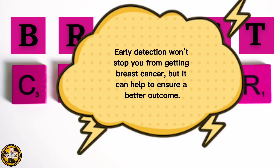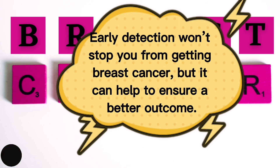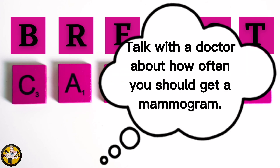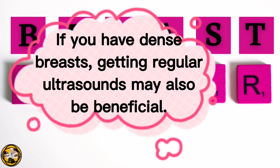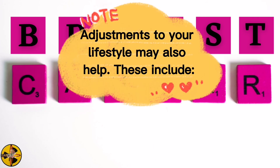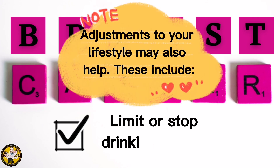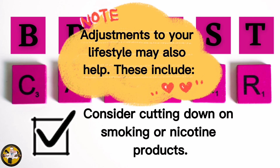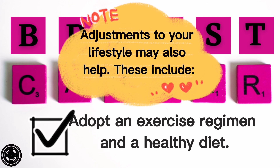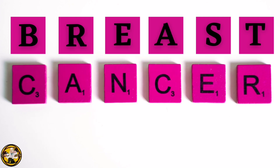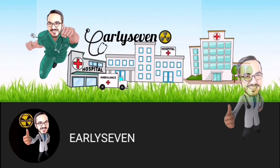Are there ways to prevent breast cancer? Early detection won't stop you from getting breast cancer, but it can help ensure a better outcome. Talk with a doctor about how often you should get a mammogram. If you have dense breasts, getting regular ultrasounds may also be beneficial. Lifestyle adjustments may also help: limit or stop drinking alcohol, consider cutting down on smoking or nicotine products, and adopt an exercise regimen and a healthy diet.